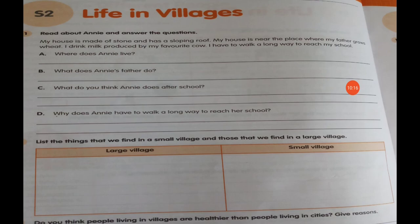Question three: Do you think people living in villages are healthier than people living in cities? Give reasons. The people living in villages are healthier because they get fresh air. They also get fresh fruits and vegetables because they can grow vegetables and fruits in their farm.